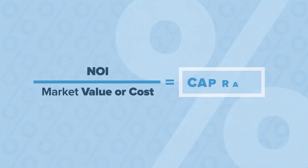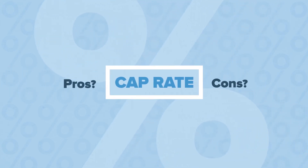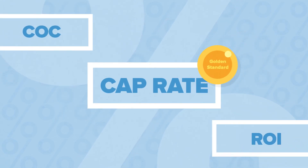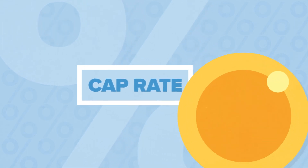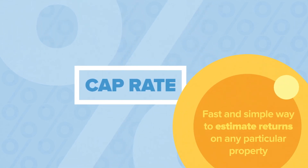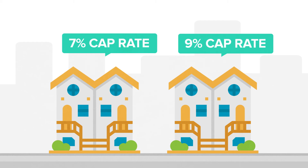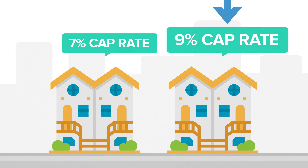Now that we understand the basics of how to calculate the cap rate and what this number tells us, let's talk about some of the pros and cons of using this formula to analyze a real estate deal. A lot of people — especially in commercial real estate — treat this formula as the golden standard for analyzing deals. One of the major benefits is that cap rates are a fast and simple way to estimate returns on any particular property. They're also a great tool for comparing two different properties with one objective measurement. If one property offers a 7% cap rate and another offers 9% and everything else is equal, it makes much more sense to buy the higher cap rate property.